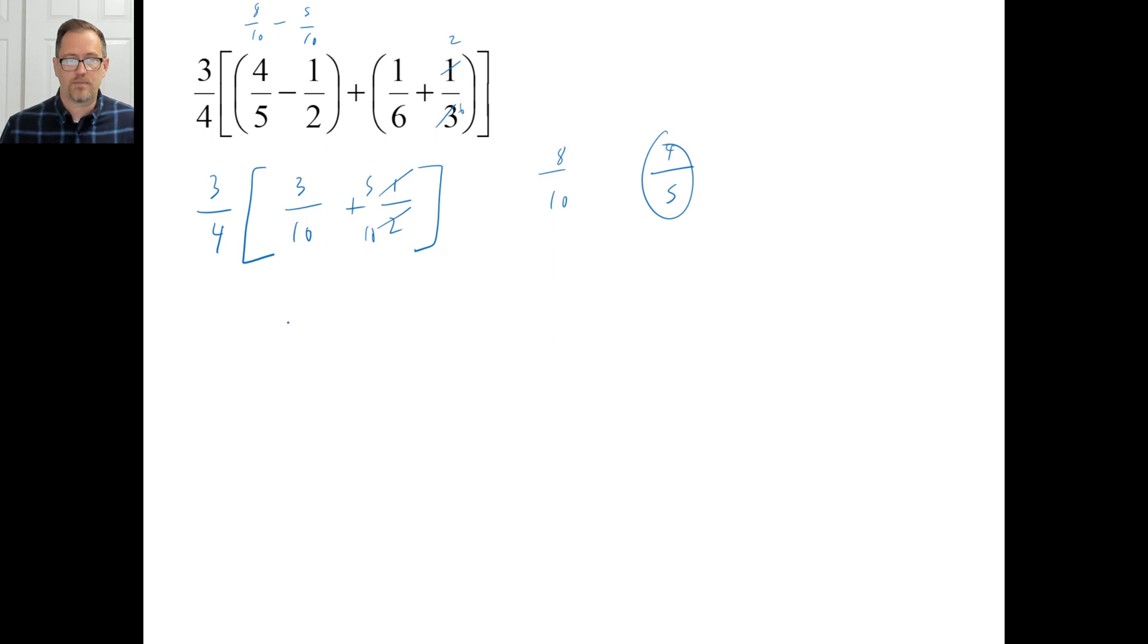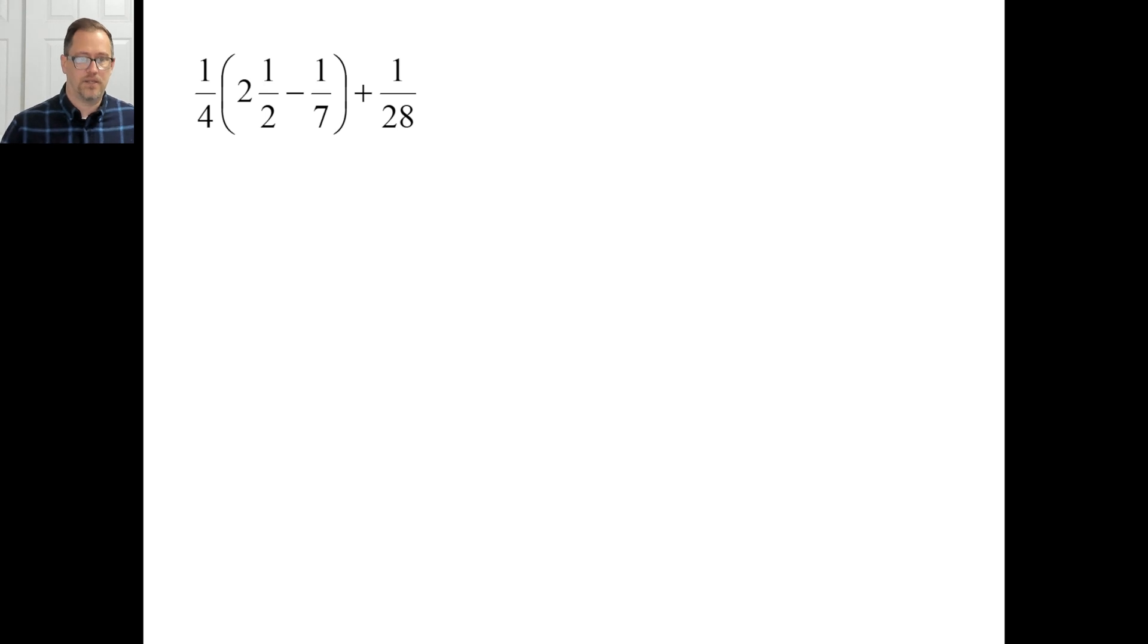So our real problem becomes three-fourths times four-fifths. That chops out, and you have three over five. Here we go. Okay. Pause it and try the next problem.